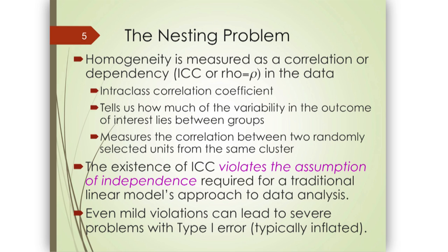The ICC — intraclass correlation coefficient — tells us two pieces of information: how much of the variation in the outcome lies between groups, and equivalently, the correlation between two randomly selected people from the same cluster. The ICC is relative to an outcome measure — you could get a different ICC for reading scores versus math scores for the same sample. So it's more an outcome-specific measure than a sample-specific measure.